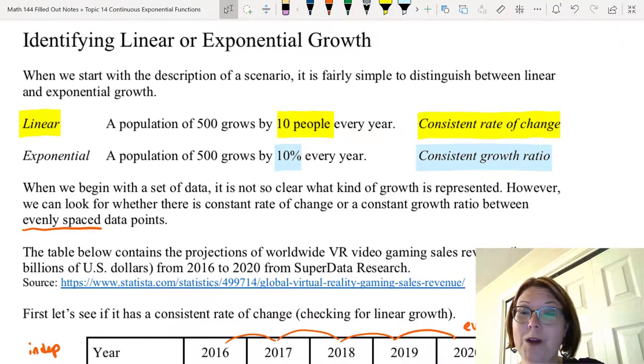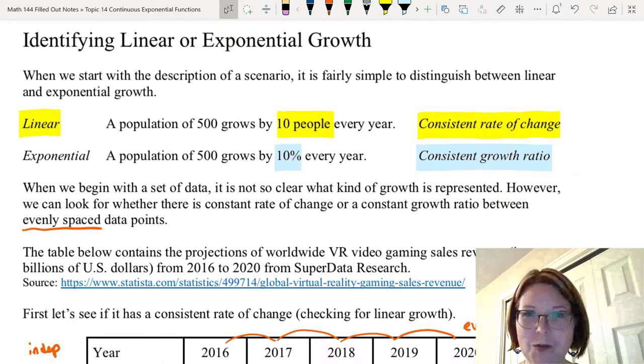Just to recap, we can test for linearity by looking at the rate of change. We can test for exponentiality looking at the growth ratio. And you want to pay very close attention to whether your data is evenly spaced or not. That's going to affect both the rate of change and the growth ratios if you're not paying close attention to it.